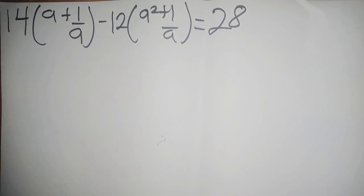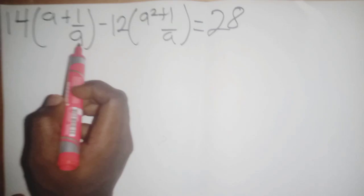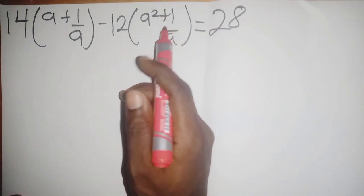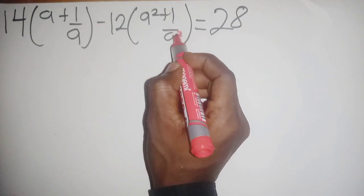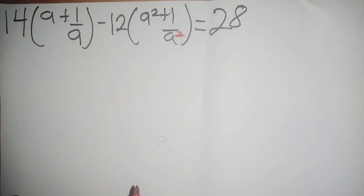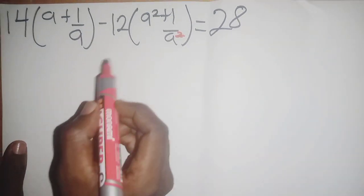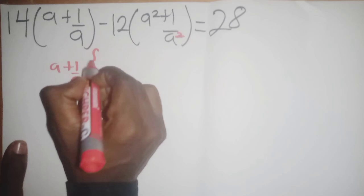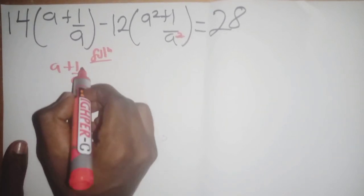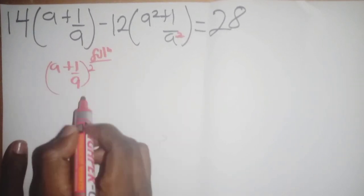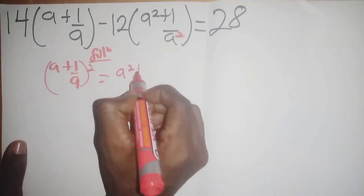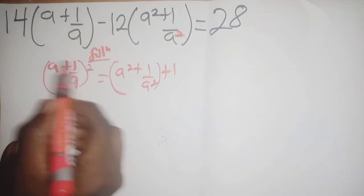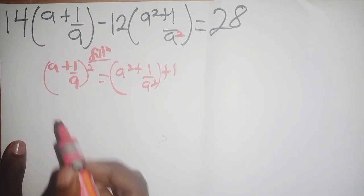If you look at the whole equation, you realize that a + 1/a can be written in terms of a² + 1/a². Remember, when you square a + 1/a, you get a² + 1/a² + 2, so a² + 1/a² comes out of that.